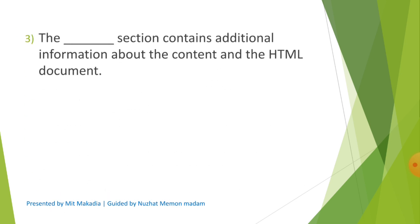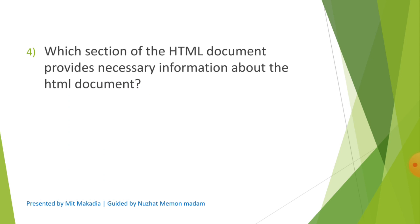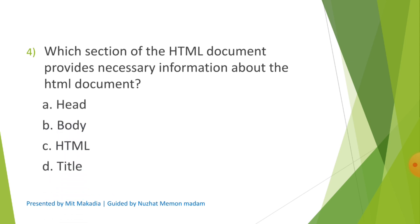Question 3: The dash section contains additional information about the content and the HTML document. Options are A) Head, B) Body, C) Title, D) HTML. The correct answer is A) Head. Question 4: Which section of the HTML document provides necessary information about the HTML document? Options are A) Head, B) Body, C) HTML, D) Title. The correct answer is A) Head.